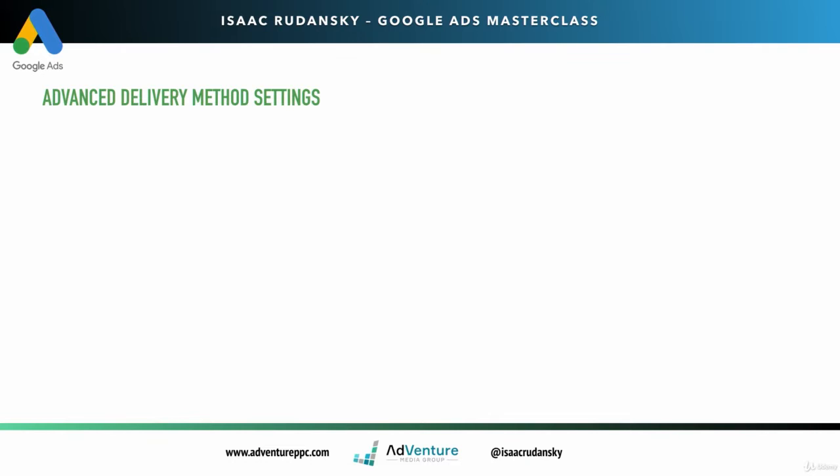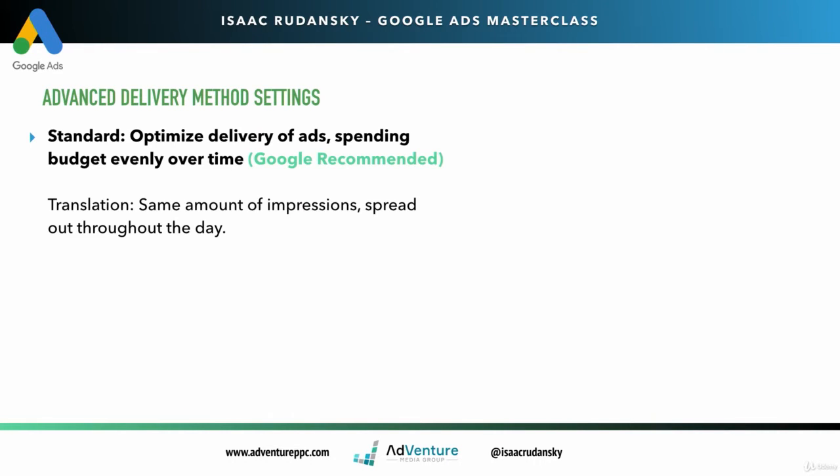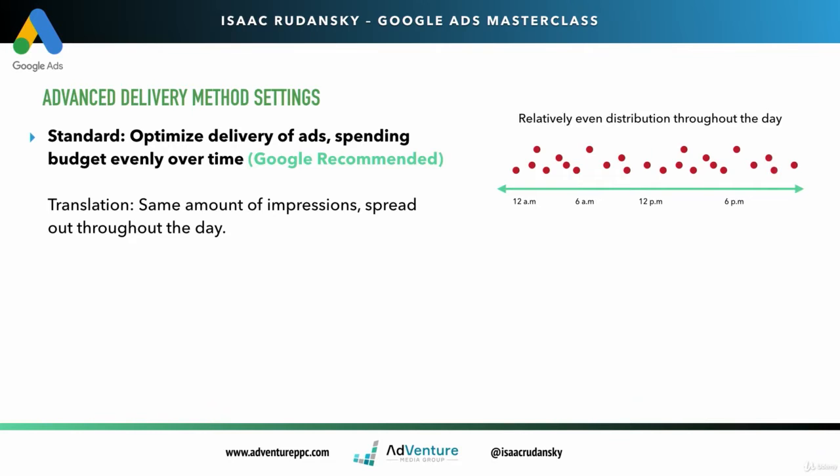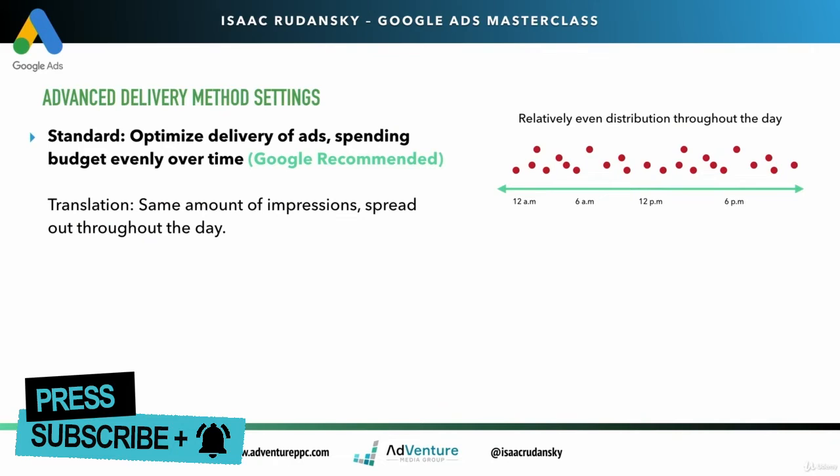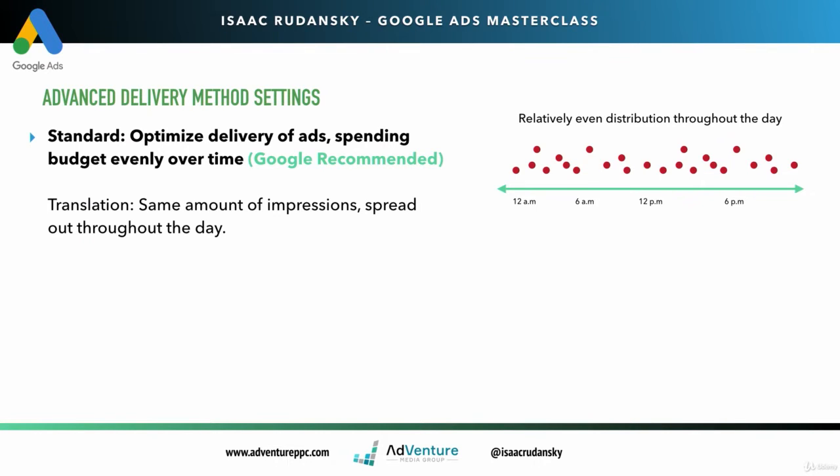So advanced delivery method - when you choose standard as an option, you're optimizing the delivery of your ads, spending budget evenly over time. That's what Google recommends. The translation of that is the same amount of impressions spread out throughout the day. Here's a visual representation of what that looks like. Let's say I'm bidding 24 hours a day. My impressions will be a relatively even distribution throughout the day. So if Google knows the maximum amount of impressions that I can get is 2,000 impressions, they'll stagger those impressions throughout the day. I'll miss out on a bunch of auctions early and Google has enough computing power to know exactly how to give me that even distribution.